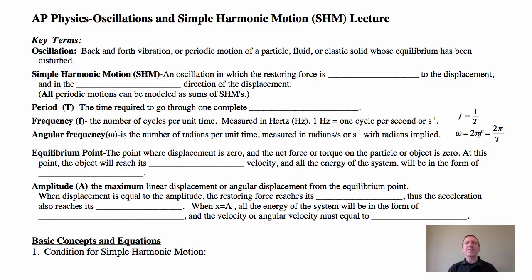Let's start off with discussing some key terms. By the way, you might want to print out this lecture on your WebAssign homepage and you can fill in the blanks as we go along and take notes. It might be very helpful for you to do that. So starting with key terms such as oscillation - back and forth vibration or periodic motion. Periodic means repeating. Of a particle, a fluid, an elastic solid, any of those whose equilibrium has been disturbed. Equilibrium means there's no forces, so obviously there's got to be a force for this to occur.